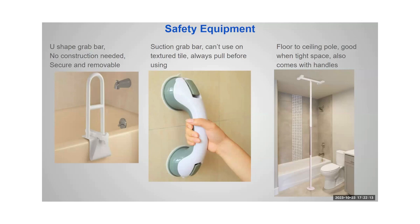A floor-to-ceiling transfer pole works really well in tight spaces and can help someone with toileting — if they can stand with assistance, they can hold the pole while a caregiver helps with pants or underwear. It can also help someone get in and out of the bathtub and can be used next to a bed. Some models need to be secured to the ceiling, but the one pictured works like a tension rod, similar to a shower rod.